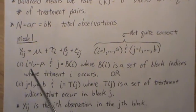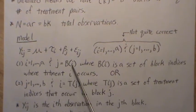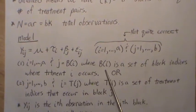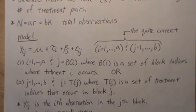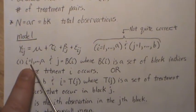I like the first one a little bit better than the second one: I equals one to A, but J equals B(i), where B(i) is a set of block indices where treatment i occurs.